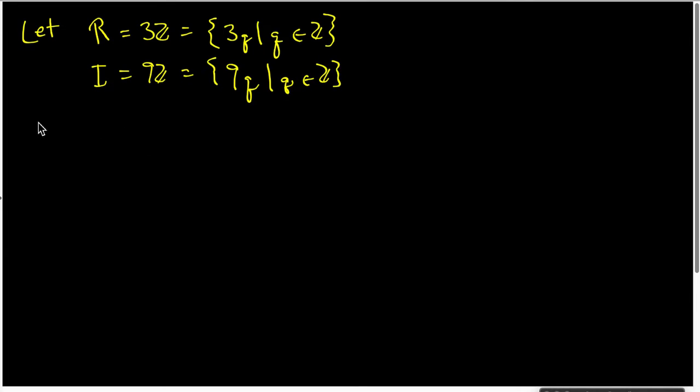It's easy to show the following things. Clearly, I is a subset of R since if I take an element K of I, then I know that K can be written as 9 times something. And 9 itself is 3 times 3. So I can write K equals 3 times 3Q, and 3Q is inside R. So this is indeed inside R.